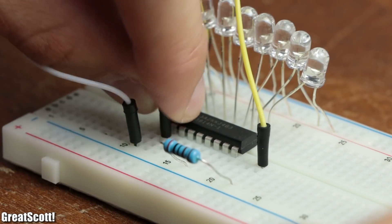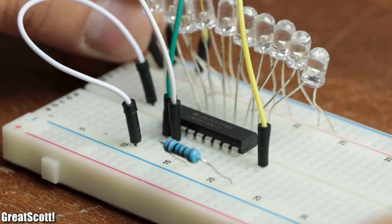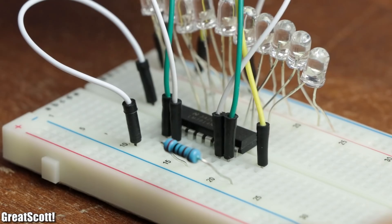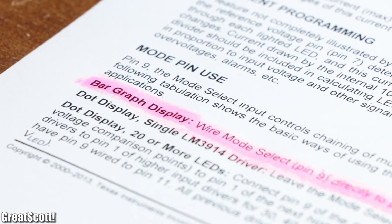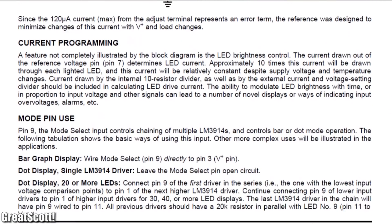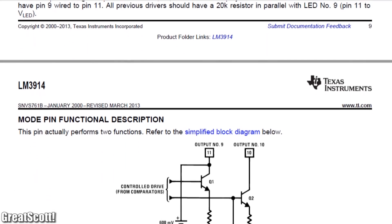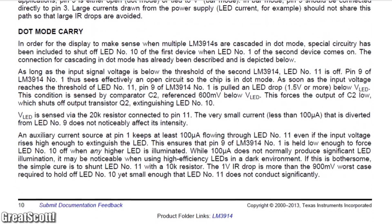Next we have to connect V minus to ground, V plus to the supply voltage, RHI adjust to ground, and mode to the supply voltage to activate the bar graph mode. And if you want to learn why exactly I connected those pins to either ground or the supply voltage, then I would highly recommend checking out the datasheet since it is very well written.